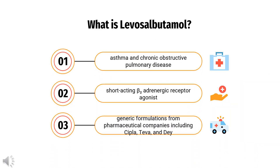Levosalbutamol is a short-acting beta-2 adrenergic receptor agonist used in the treatment of asthma and chronic obstructive pulmonary disease. It is available in some countries in generic formulations from pharmaceutical companies including CIPLA, TEVA, and DEI, among others.